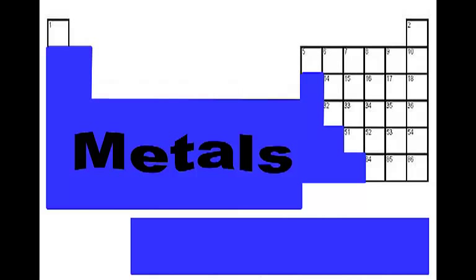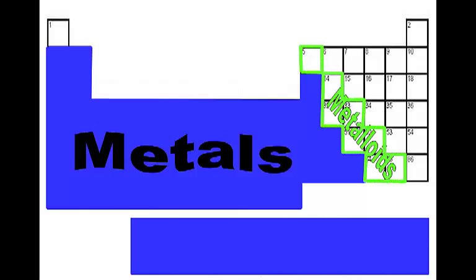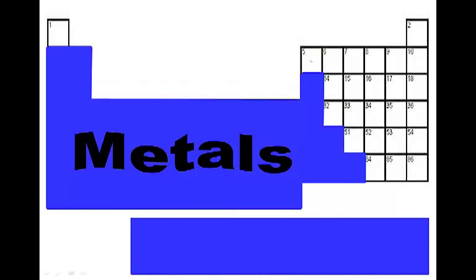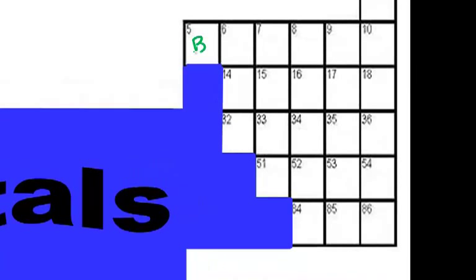So what we said is touching the metals on one side are the metalloids. If you notice, this is the staircase. We start up here with boron. Now we're going to skip aluminum because we know that aluminum is a metal.